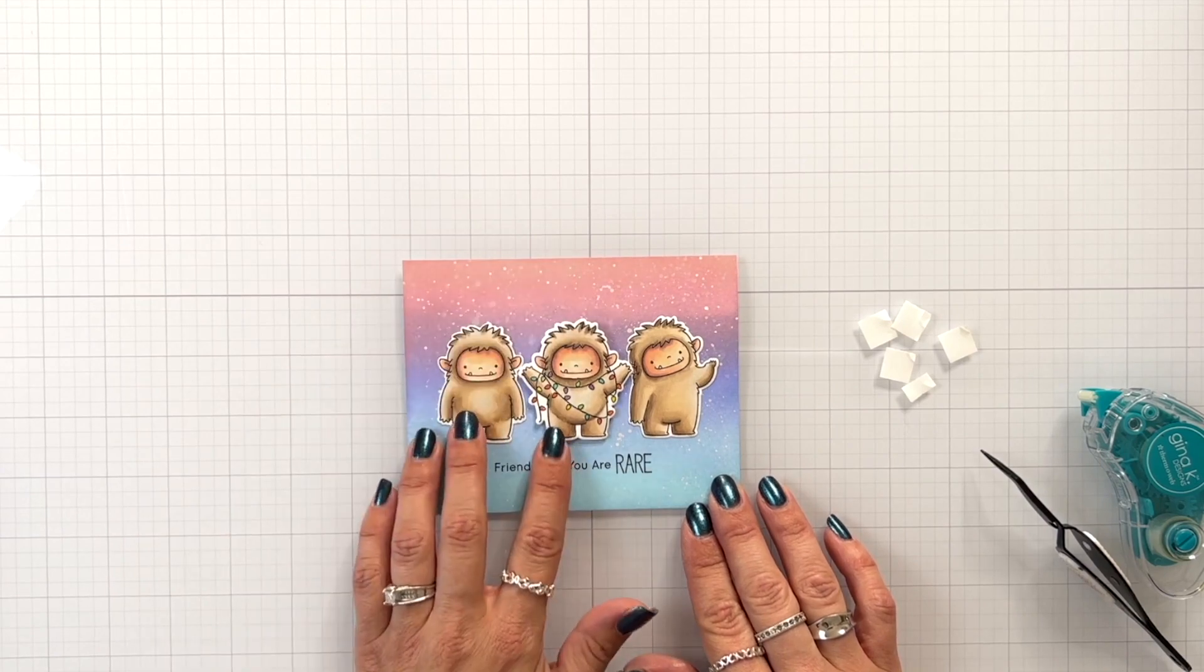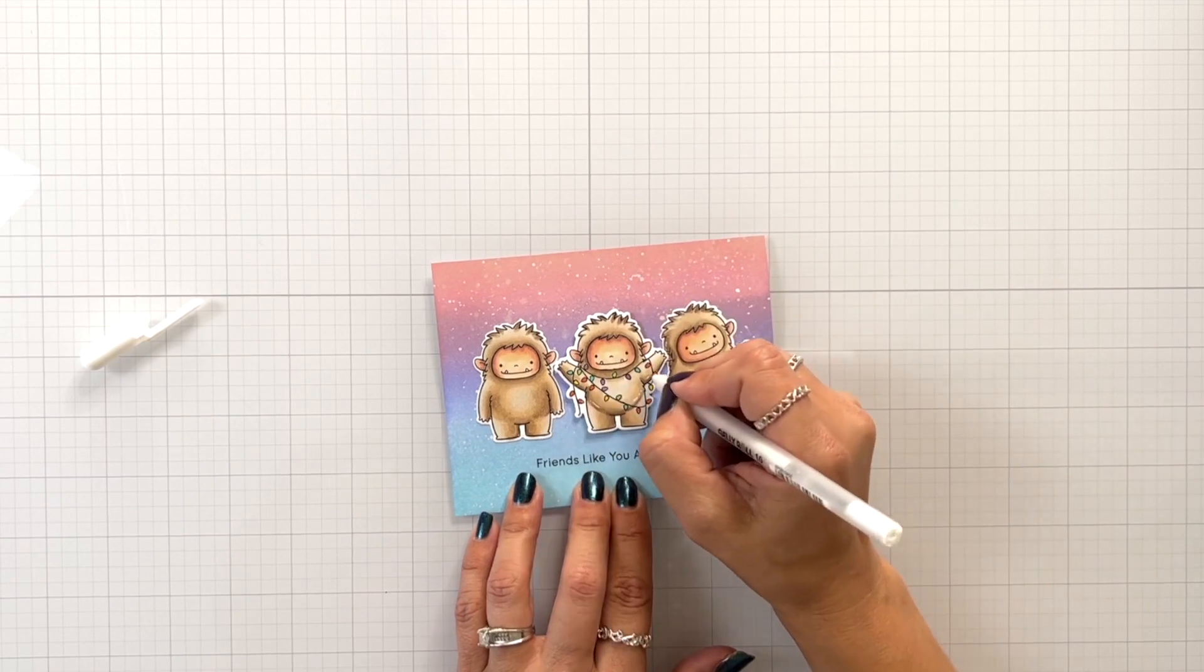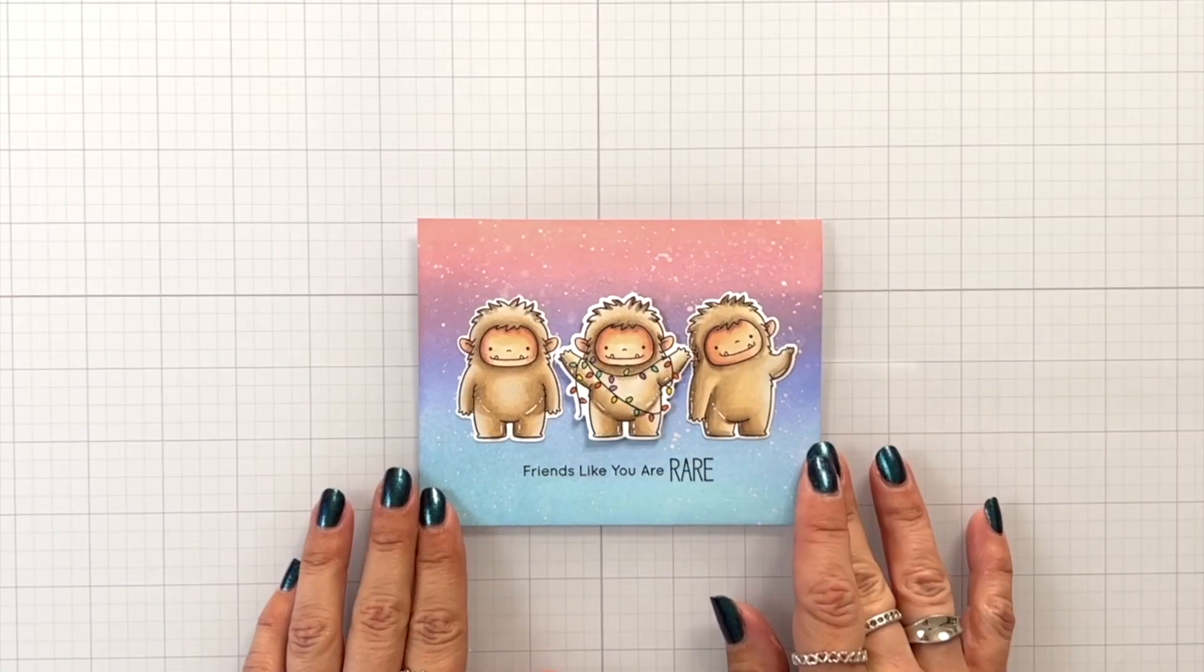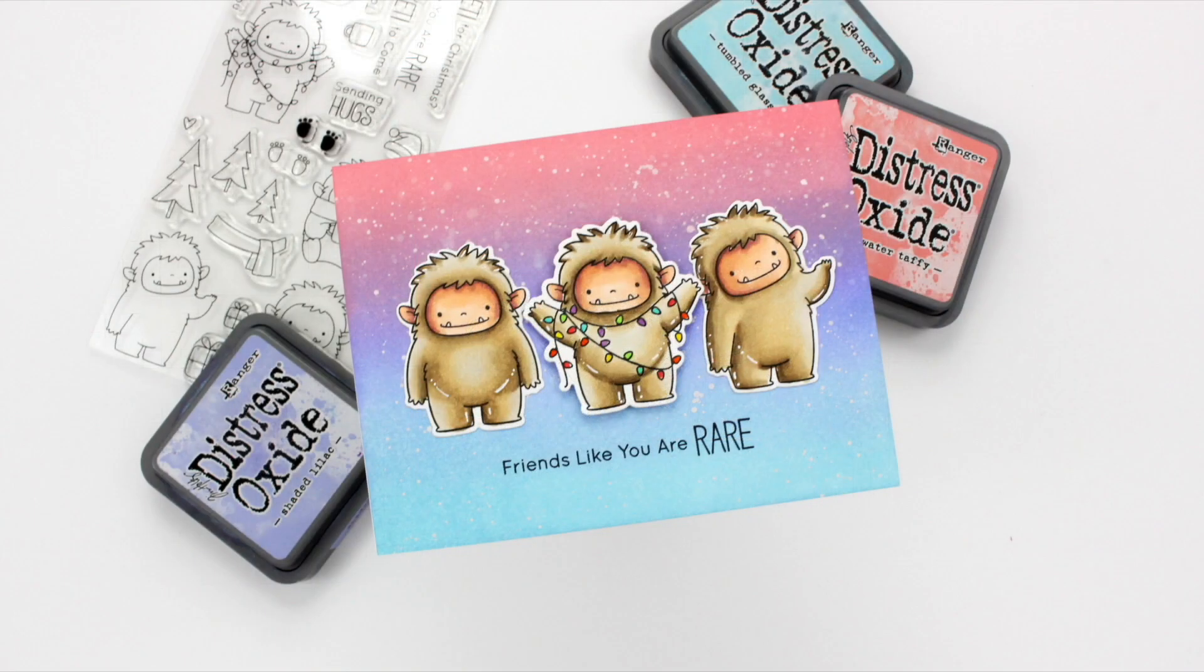Once I have those positioned, then I can remove the backing of the foam squares and add my character in the center there. My last finishing touch is taking a white gel pen and just adding some highlight areas kind of around the belly, down on the legs, and then on some of the arms, and that will finish off my card project for you today. I hope you enjoyed today's video. Thank you so much for joining me.